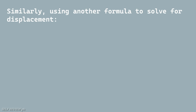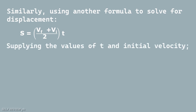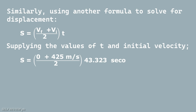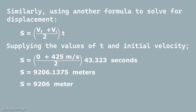Using another standard formula to solve for displacement: S equals the quantity of final velocity plus initial velocity, divided by 2, times the time t. Substituting the values, S equals 9,206.1375 meters. The height or vertical displacement of the bullet equals 9,206 meters.